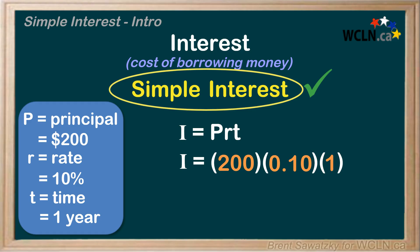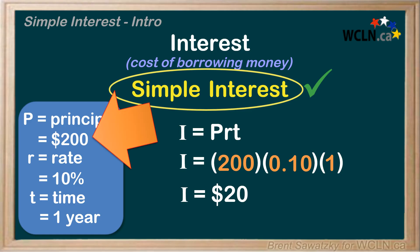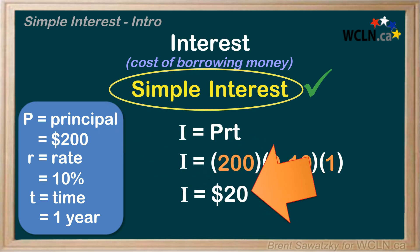We pull out the calculator: 200 times 0.10 times 1 equals 20. So if your friend borrowed $200 from you at a rate of 10% for one year, then they would owe you back, using simple interest, a total of $220 — $200 to pay the loan back, plus an additional $20 of interest. That is for the privilege of borrowing your money. In this case, you were the lender of the money, so you earned the interest. Your friend was the borrower of the money, so they had to pay the interest.